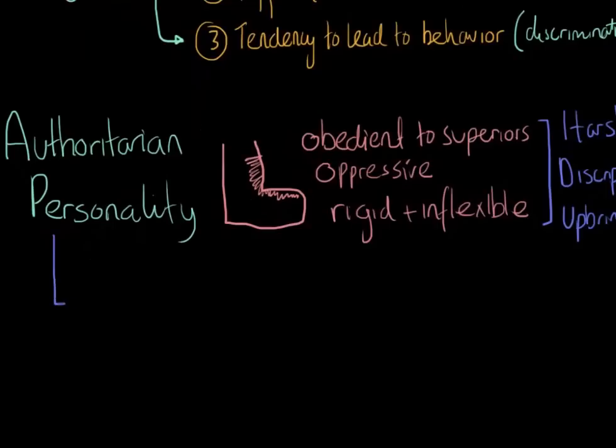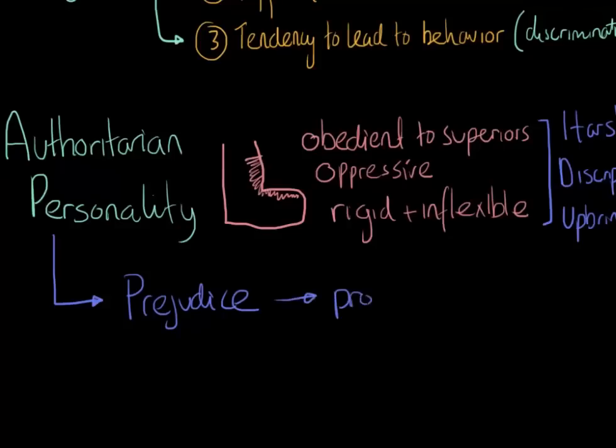And people with this authoritarian personality, they actually use prejudice to help them cope with their worldview. It's actually protective of their ego, and prejudice avoids them having to confront the unacceptable aspects of themselves. They're always focusing on other people, and how other people behave, and how other people act, and how much they hate or don't like other people.